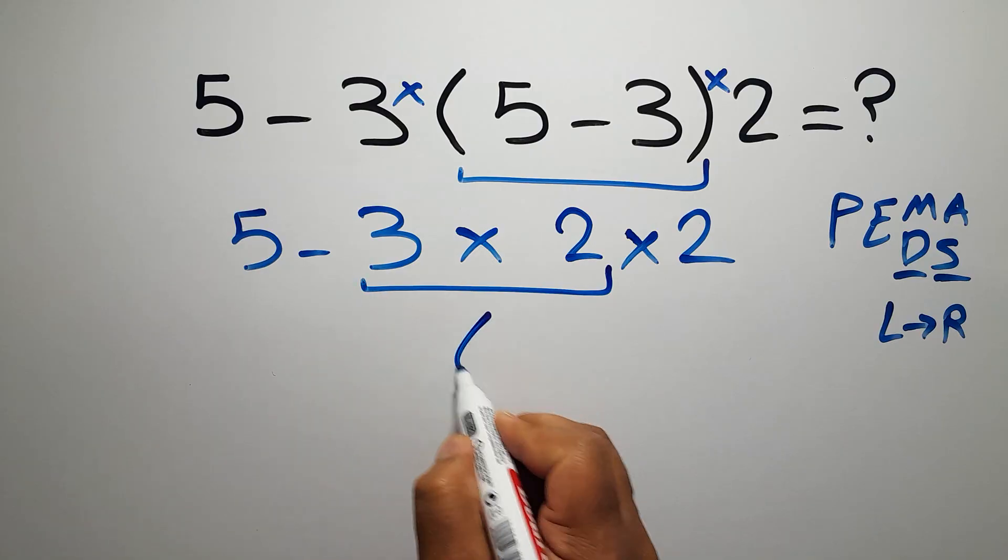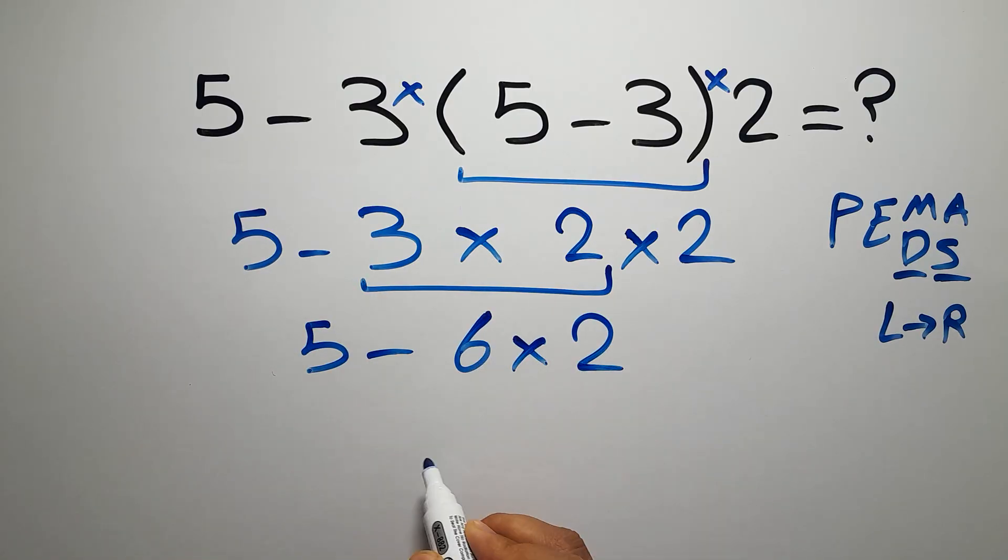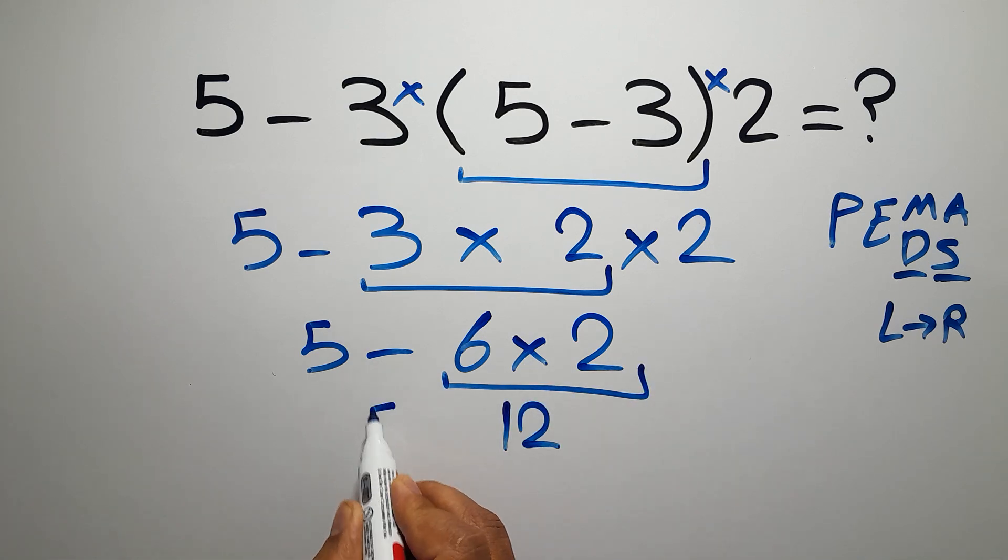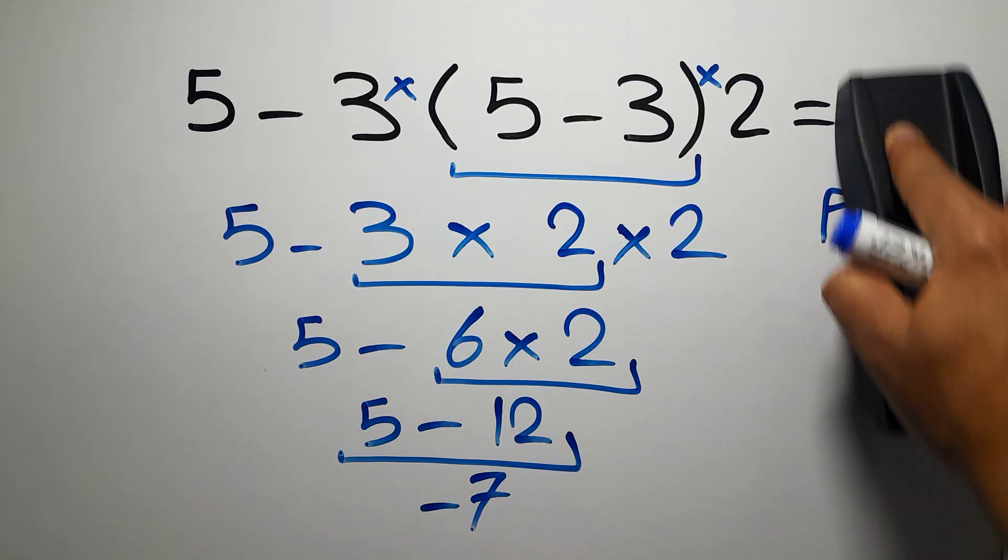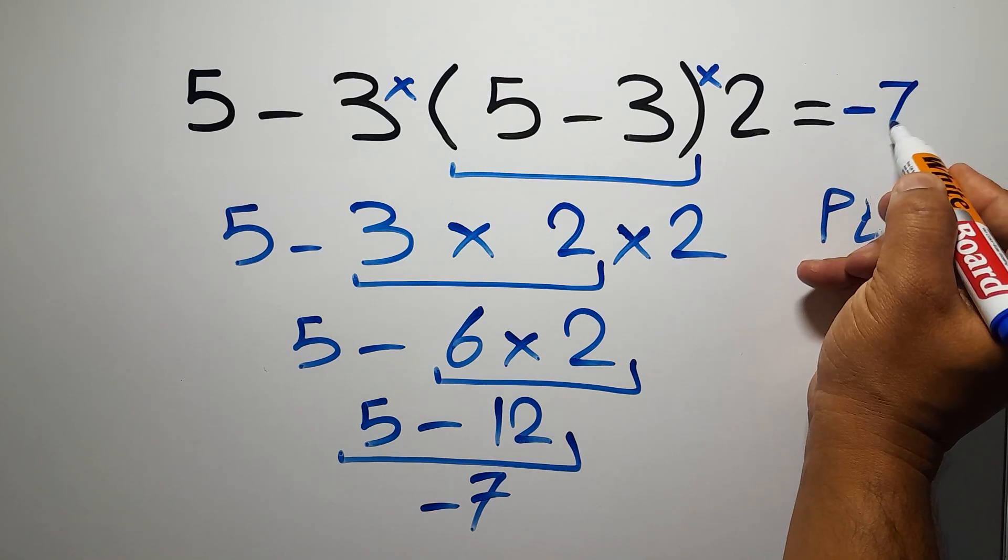So 5 minus 6 times 2. Now 6 times 2 gives us 12, and 5 minus 12 equals negative 7. And this is our final answer to this problem. The correct answer is negative 7.